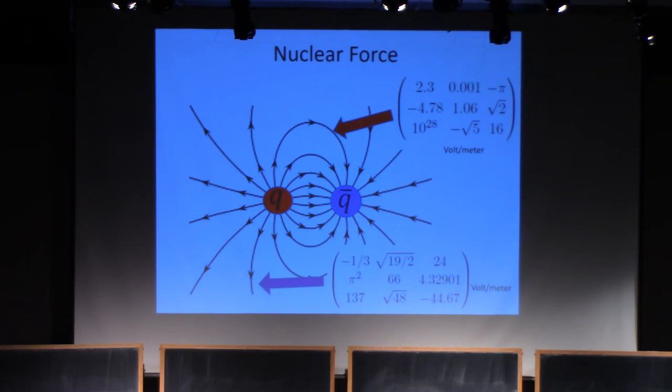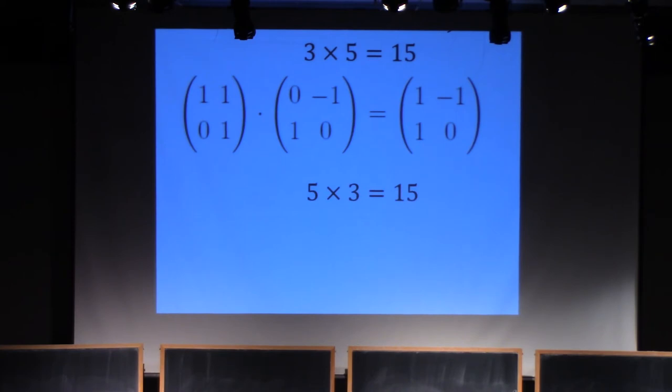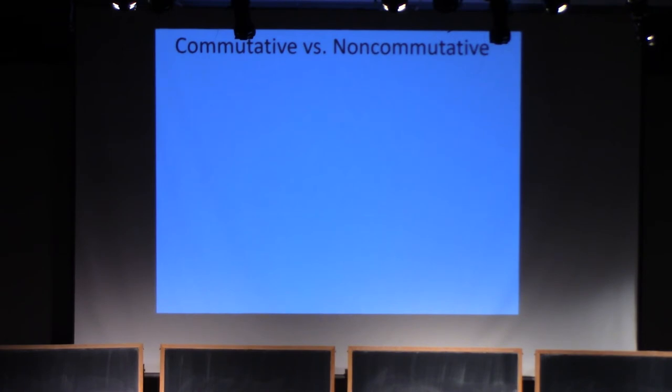Numbers are like matrices in many ways, and in particular, you can multiply them. Three times five is 15. You can also multiply matrices. Here, I have two-by-two matrices, and there's a rule for multiplying the matrices. But there's a big difference between the multiplication of numbers and the multiplication of matrices. If you multiply three times five, you get 15, and if you multiply five times three, you get 15, the same answer. The order doesn't matter. But if you multiply matrices in the opposite order, in general, you get a different answer. This is the distinction between a commutative and a non-commutative multiplication.